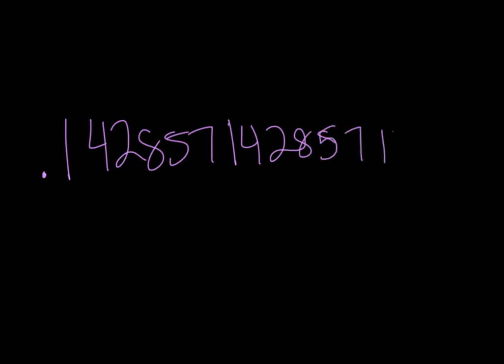142857, 142857, 142857, like so. And of course, this is continuing on. But the way we can see this is, okay, 142857 is 1/7. Now, 285714 is 2/7. 428571 is 3/7.